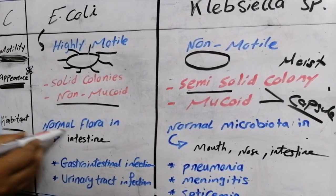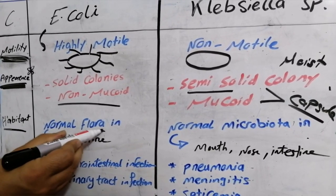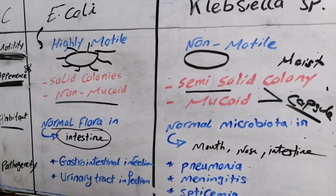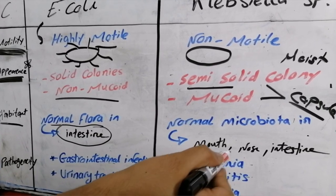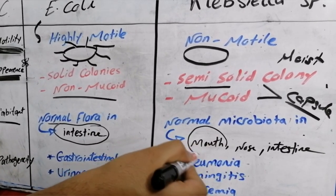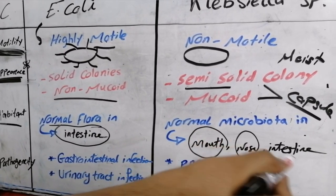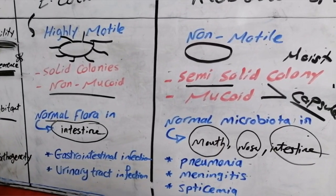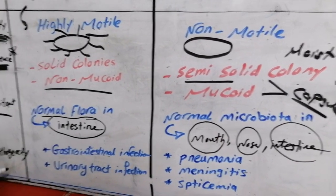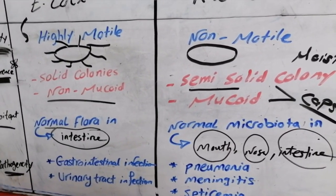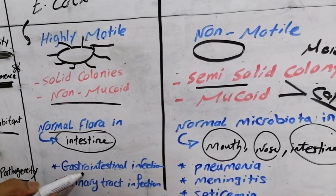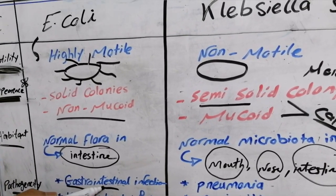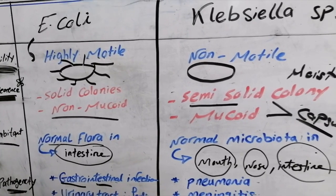E. coli is normal flora in the mouth, nose, and intestine. E. coli causes gastrointestinal infection and urinary tract infection.